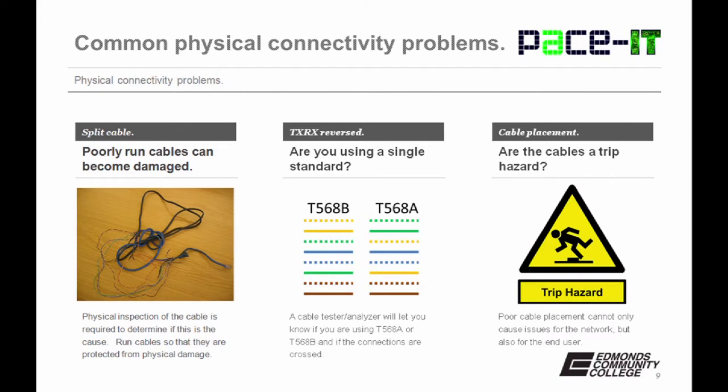Cable placement is another physical connectivity problem that you may have. Are the cables a trip hazard? Poor cable placement can not only cause issues for the network, but also for the end user. If they trip over it, they may become hurt. And if they trip over it, more than likely they are going to pull it out of whatever socket it's been placed in.